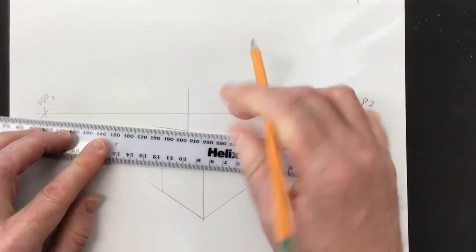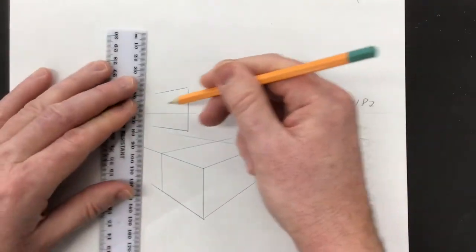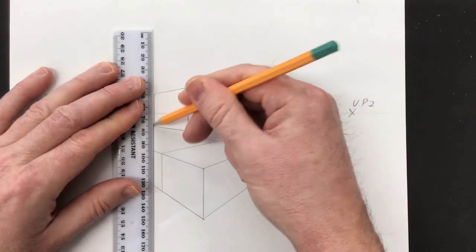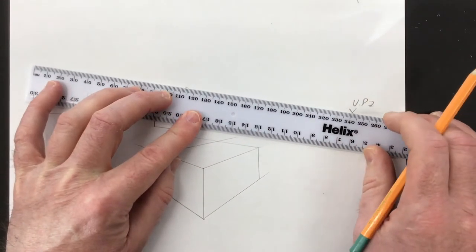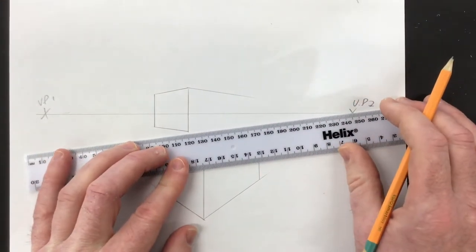So for the cube on the horizon line, again start with the nearest vertical, and then two lines to VP1. Vertical there, and then two diagonal lines to VP2. Remember this is on the horizon line, your eye level, so you would only see two sides. You don't see the top and bottom.